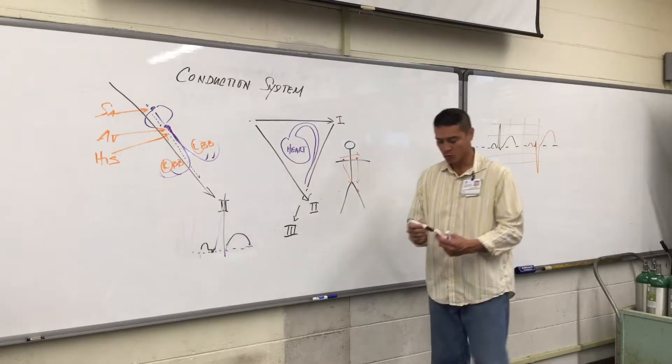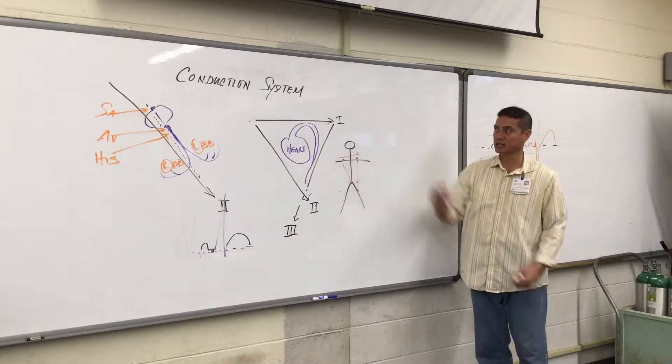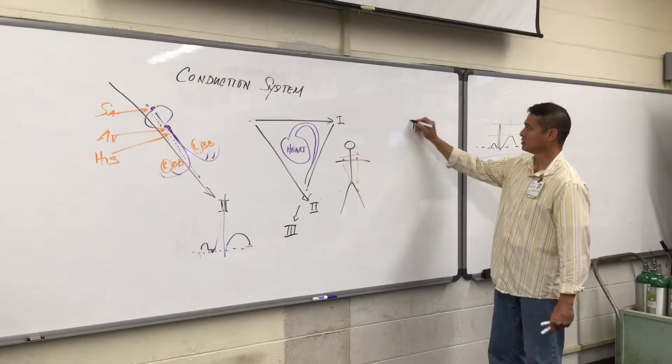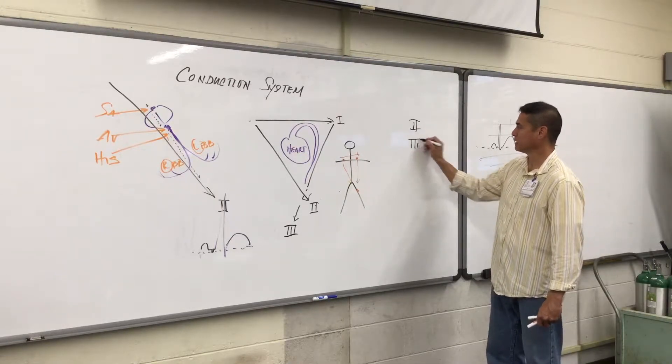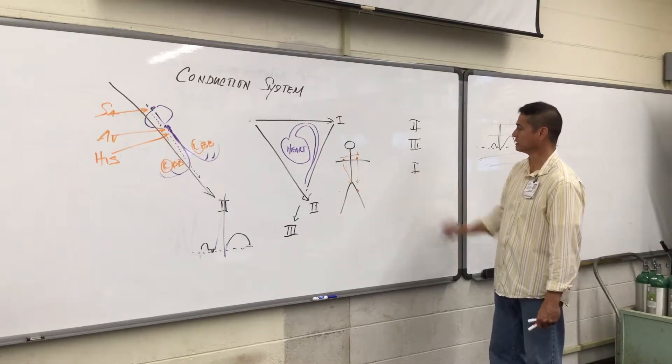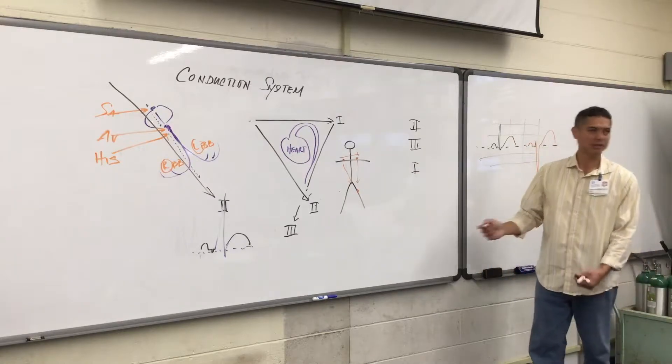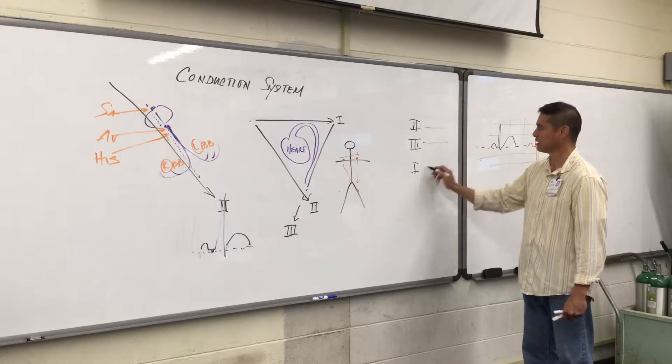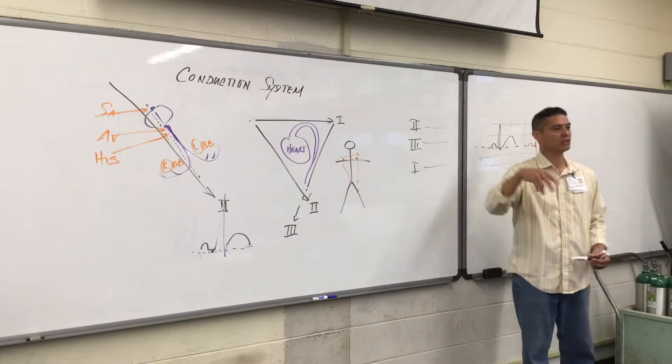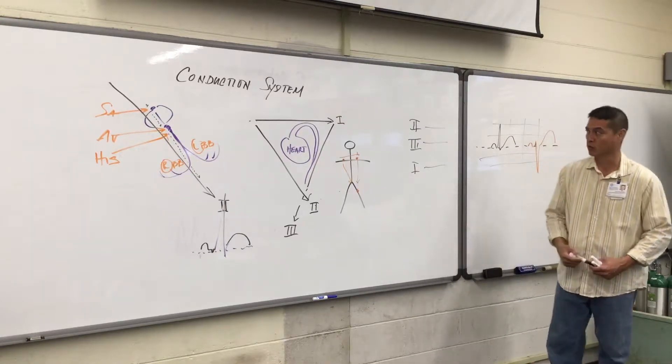That would be our normal standard configuration when we're looking at the leads - usually leads 2, 3, and lead 1. We're looking at this as they print out, a continuous printout on our EKG screen or a continuous lead where we just see those complexes going over.